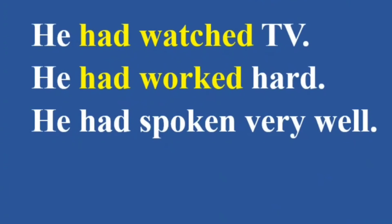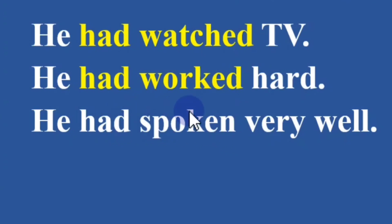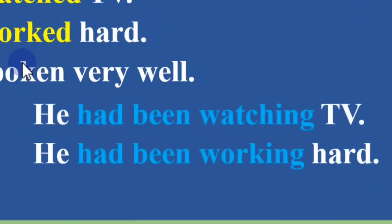He had watched TV, he had worked hard, and he had spoken very well. If there is auxiliary 'had' with the past participle — the third form of the verb — 'had' with verb three, this is past perfect tense. Simple! If there is 'had,' 'been,' and verb -ing — 'he had been watching TV,' 'he had been working hard' — this is past perfect continuous. 'Had been' with verb -ing: past perfect continuous.